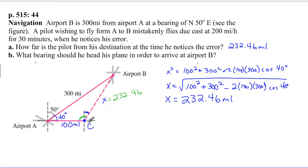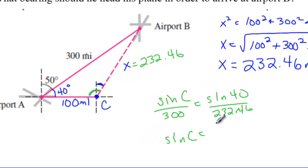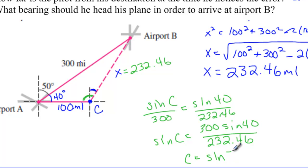So, in order to do that, I now know this is 232.46. I can use the law of sines. So, I can call this c and say sine of c over 300 equals sine of 40 over 232.46. Now, if I multiply both sides by 300, I get sine of c equals 300 sine 40 over 232.46. To get c by itself, I do the sine inverse of this whole thing, 300 sine 40 over 232.46.